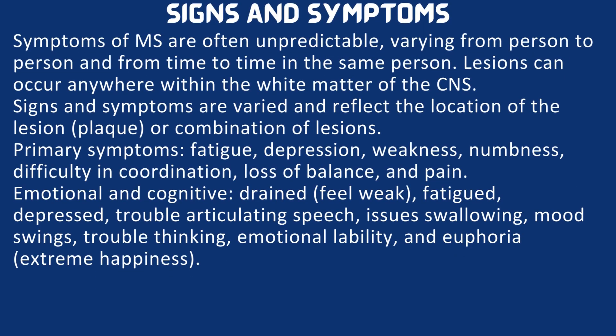Next are signs and symptoms. Symptoms of multiple sclerosis are often unpredictable, varying from person to person and from time to time in the same person. Lesions can occur anywhere within the white matter of the CNS, and signs and symptoms reflect the location of the lesion or plaque or combination of lesions. Primary symptoms such as fatigue, depression, weakness, numbness, difficulty in coordination, loss of balance, and pain can be seen in some patients.